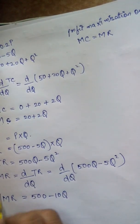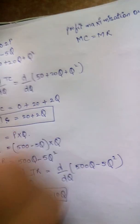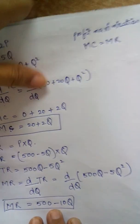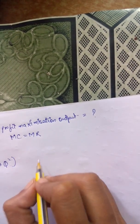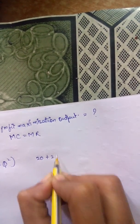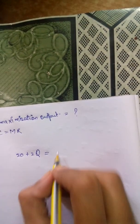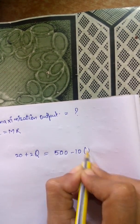So now we get MR and we get MC. We will equate both of these to get the value of Q. Q is the output, so we will equate MC: the value of MC is 20 plus 2Q equals MR. The value of MR is 500 minus 10Q.